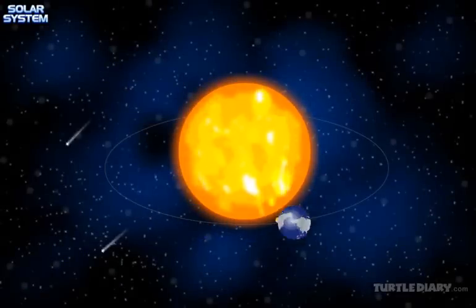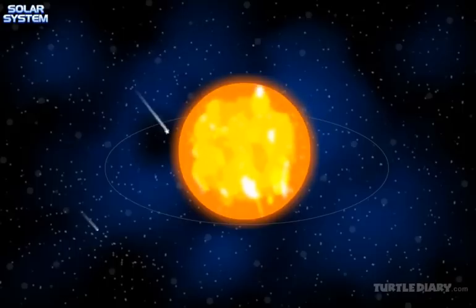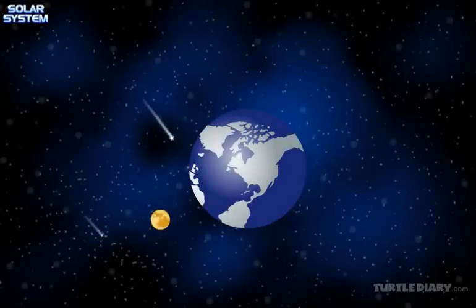It takes 365 days to revolve around the sun. Earth looks blue from space because it is mainly covered by water. Earth has one moon, though there are many planets that have more than one moon.